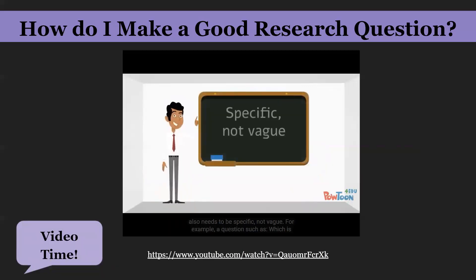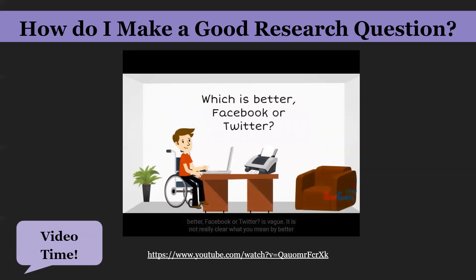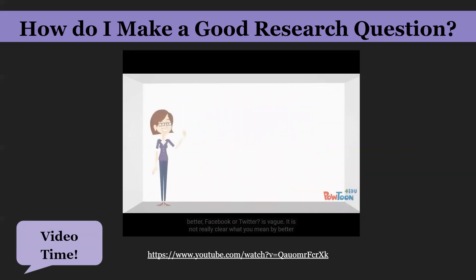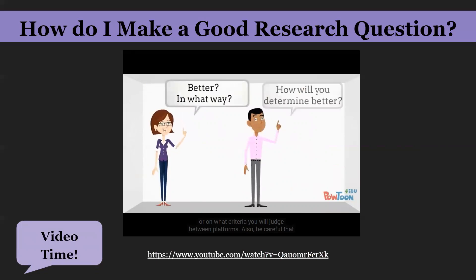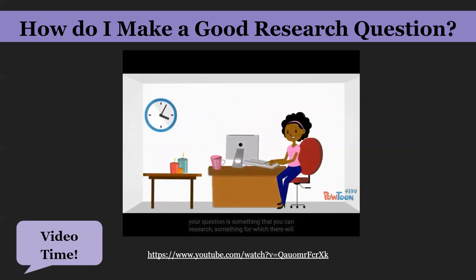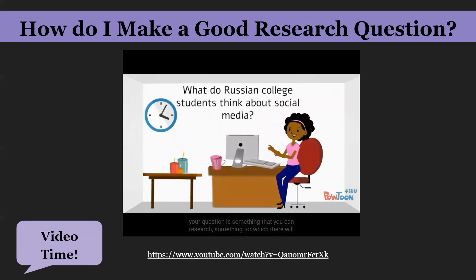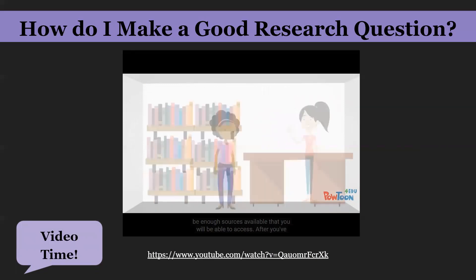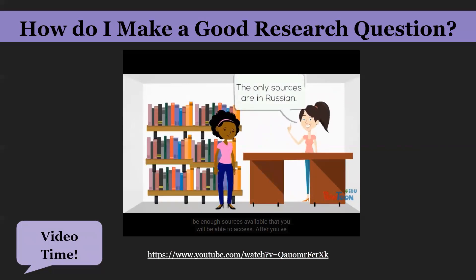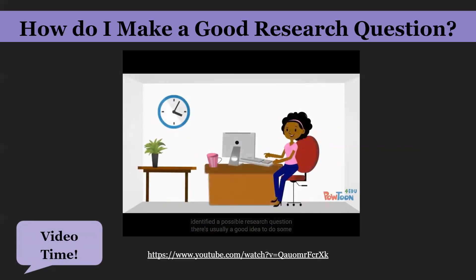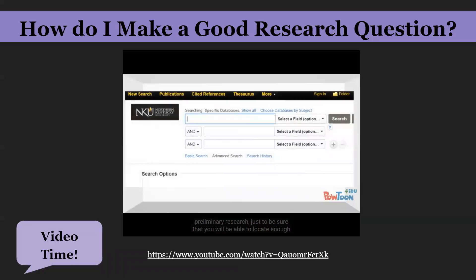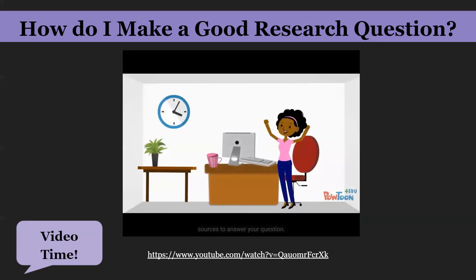Your question also needs to be specific, not vague. For example, 'which is better, Facebook or Twitter?' is vague — it's not clear what you mean by 'better' or on what criteria you'll judge the two platforms. Also make sure your question is something you can research, with enough sources available that you can access. After identifying a possible research question, it's a good idea to do some preliminary research to make sure you'll be able to locate enough sources to answer it.